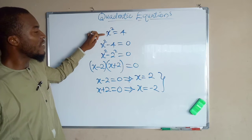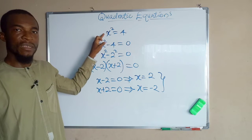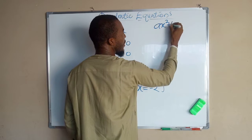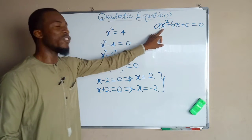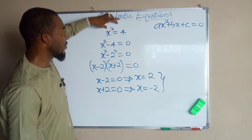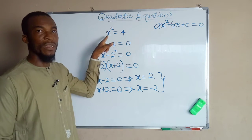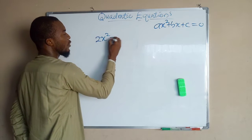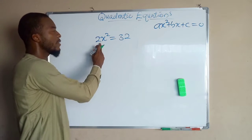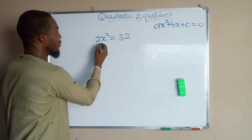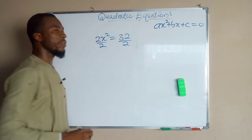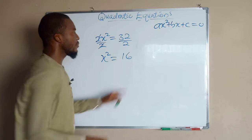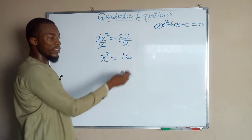What if the leading coefficient a is not 1? In the general form ax squared plus bx plus c equals 0, the coefficient of x squared is always a. Suppose we have 2x squared equals 32 — here the leading coefficient is 2. To get rid of this 2, divide both sides by 2, giving x squared equals 16, because 32 divided by 2 is 16. This can be written as x squared equals 4 squared, since 4 squared is 16.